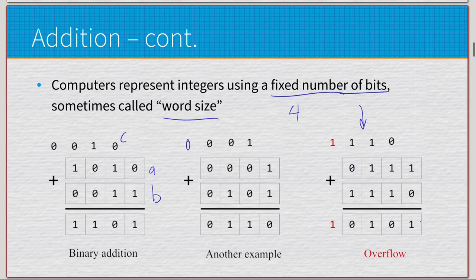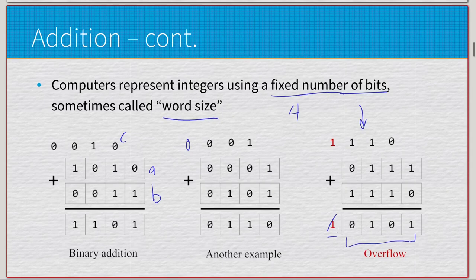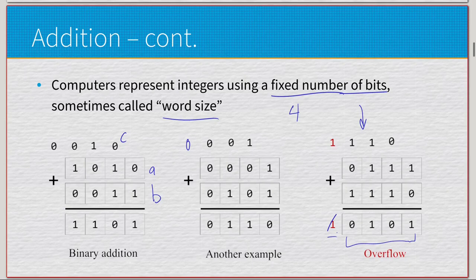Looking at this example: one plus zero is one, no carry bit. Zero plus one plus one is zero with carry bit. One plus one plus one is one with carry bit. Then one plus zero plus one is zero with a carry bit. However, our word size is four — everything in our computer uses four bits. But with this carry bit at the end, it gives us a fifth bit. So what do we do? We just ignore it. We treat it like it doesn't exist because it would break our hardware. The same thing happens in 16-bit, 32-bit, and 64-bit computers — just ignore the overflow, it will wrap around and it is fine.